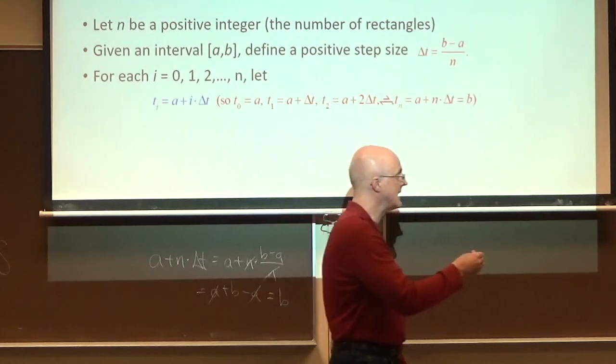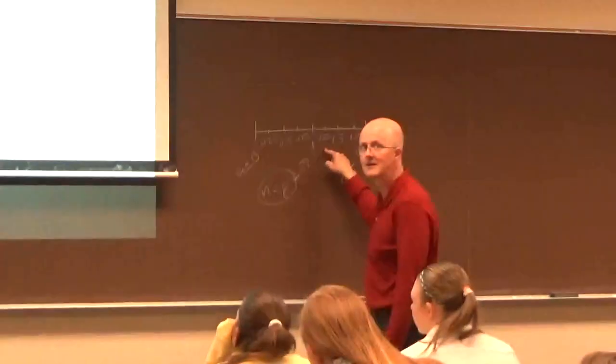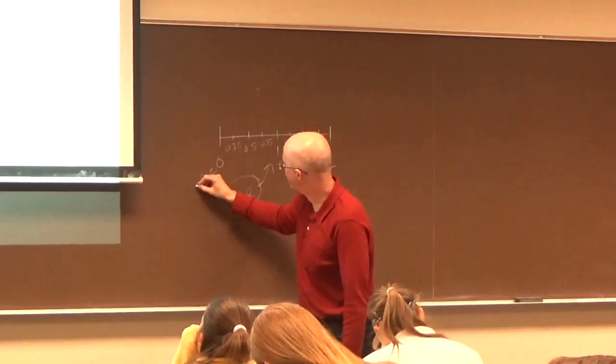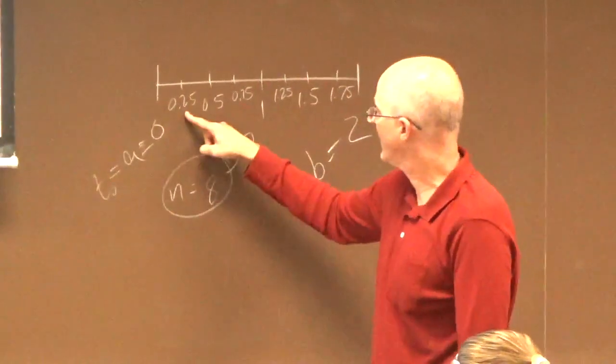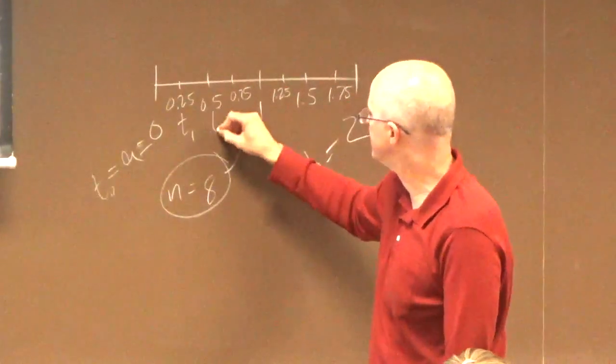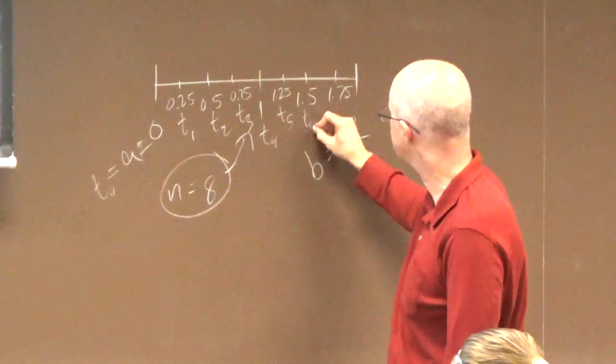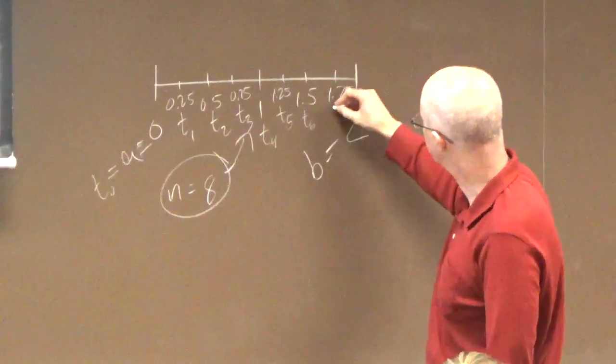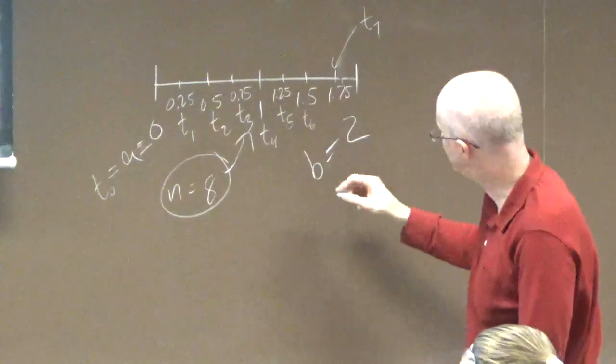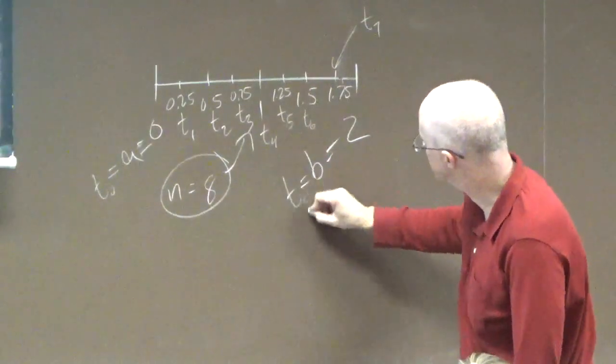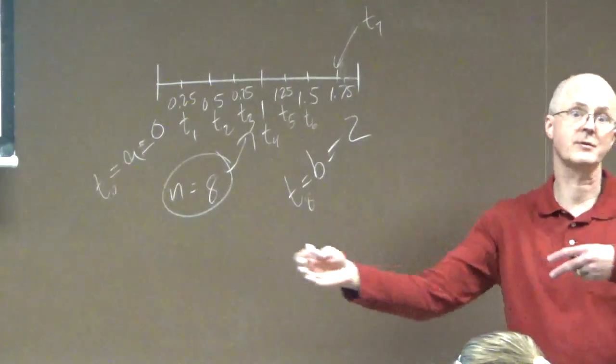What I'm doing here is I'm just labeling, coming back to this picture over here, I'm just labeling these points. In this picture, a is 0, which is also t sub 0. The first point here is t1, this is t2, this is t3, this is t4, t5, t6, t7, right here. And then b is t8. But if n were 16, I'd have t0 through t16.